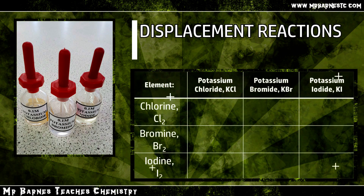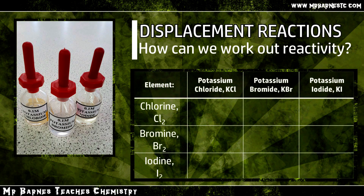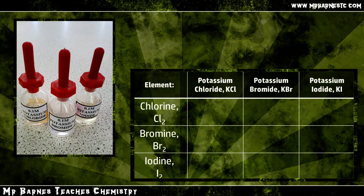To figure out the order of reactivity, I'm going to take three salt solutions — potassium chloride, potassium bromide and potassium iodide — and add chlorine, bromine and iodine to them to see if a reaction occurs. If a reaction occurs, the element added in is more reactive than the element in the salt. For example, if chlorine added to potassium bromide causes a reaction, then chlorine is more reactive than bromine.